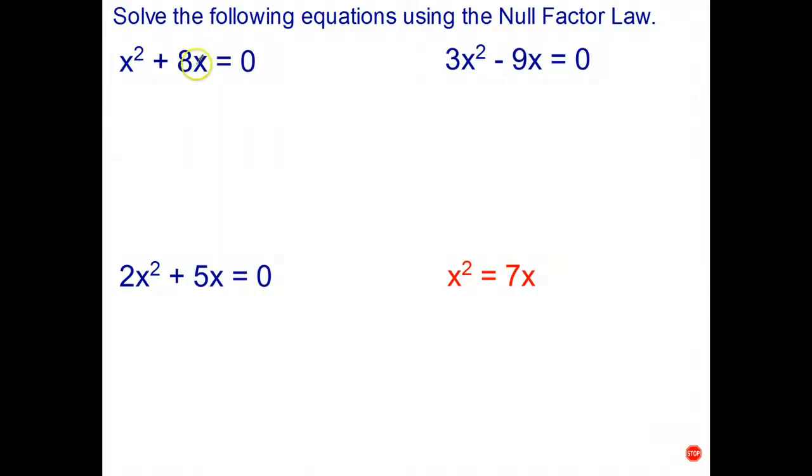So what I have to do is rewrite x squared plus 8x in factorized form. The common factor is x. What's left behind in the brackets is x plus 8 equals 0. And now we've got factorized form, so once again we can say we've got a multiplied by b equals 0 and we can carry on as before.